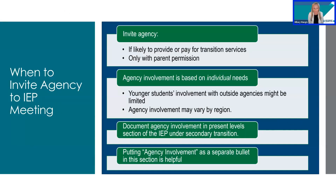Some general considerations for IEP team members: invite an agency if they are likely to provide or pay for transition services, and only with parent permission. Agency involvement is based on the student's individual needs — younger students' involvement with outside agencies might be limited, and agency involvement may vary by region. The IEP team should document agency involvement in the present level section of the IEP under secondary transition. As a best practice, putting agency involvement as a separate bullet in this section helps the BSC advisor during cyclical monitoring find which agencies were invited or involved in the development of the IEP.